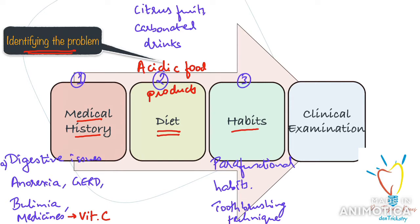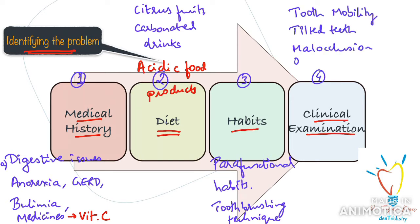Once you confirm the medical history, the diet, and the habits, move on to the clinical examination. Here you check for any indicators of defective occlusion like tooth mobility, tilted or drifted teeth, occlusal wear, over-erupted teeth, or any form of malocclusion like crossbite or deep bite. All these are contributing factors for non-carious lesions. You can also take radiographs to confirm any underlying disturbances. So follow this protocol for all your patients.